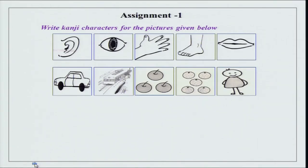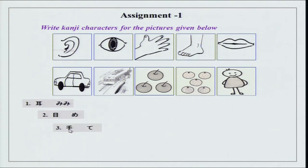There are a lot of pictures in this assignment and you have to write kanji characters for these pictures. The first one looks like an ear — mimi. The second one is me, which is eye. The third picture is of a hand, and hand is te.